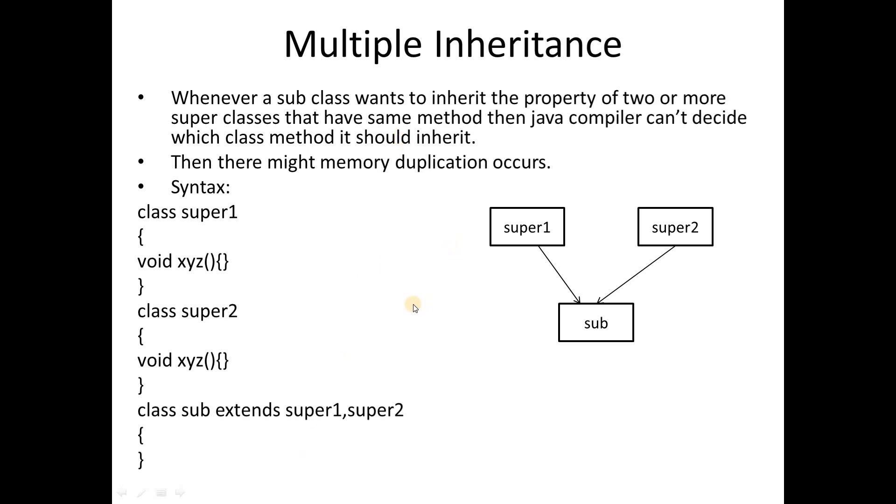So look at here, whenever a subclass wants to inherit the property of two or more super classes, a single subclass inherits properties from two or more super classes. These cases are multiple inheritance. In that case, if they have the same method, as we see here, super1 and super2 both have the same method xyz.